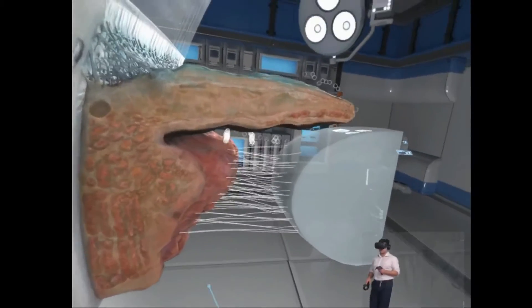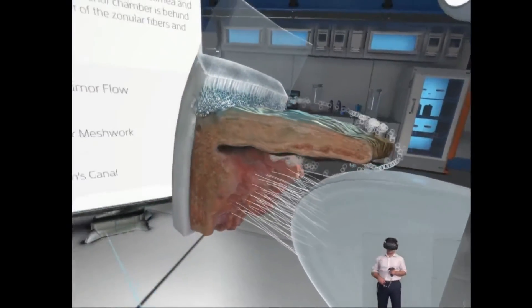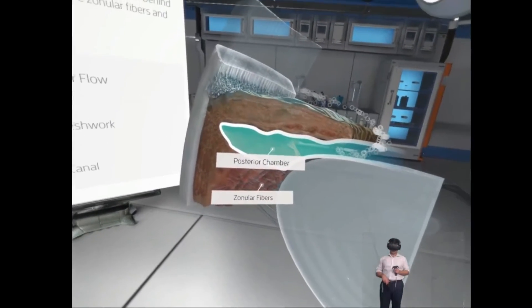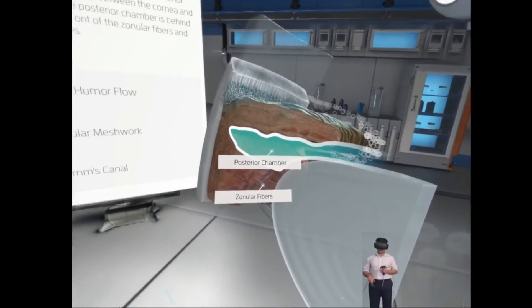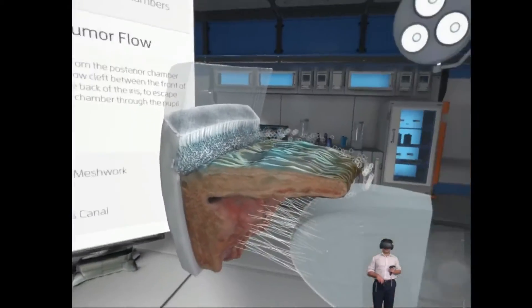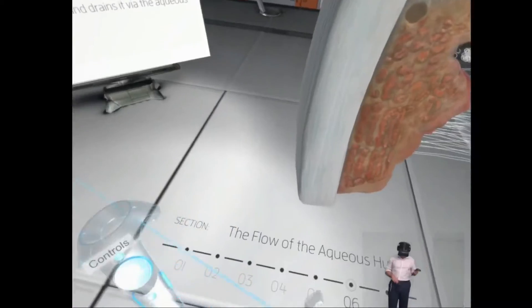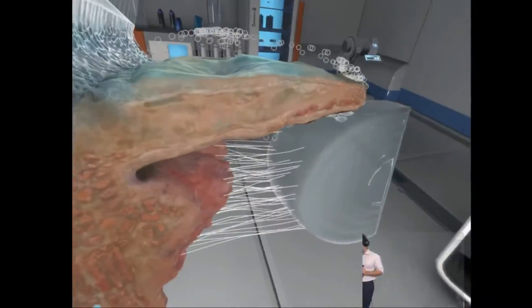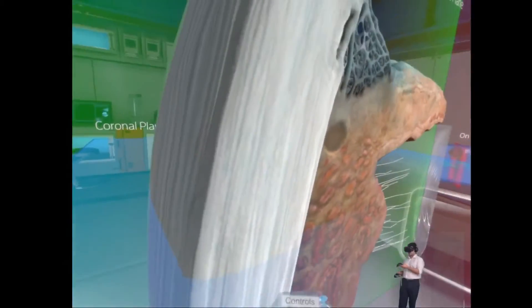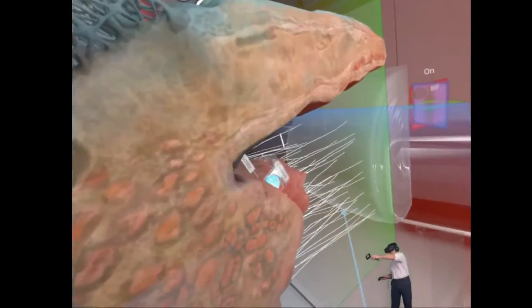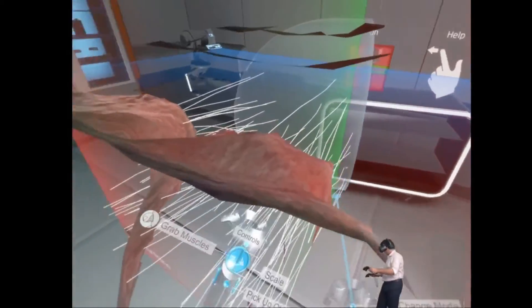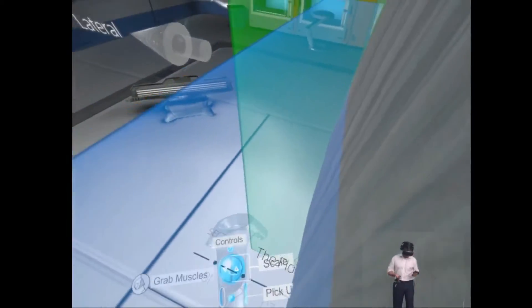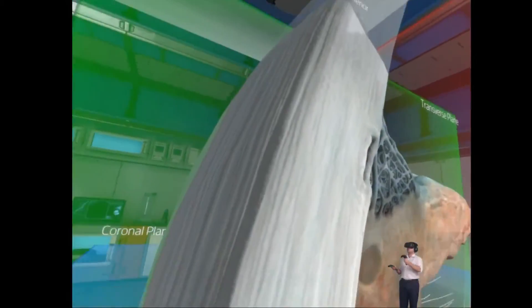There we go, so that was that, and now going to the aqueous humor flow. This is a nice model and this is very useful I think for explaining drainage to patients who are suffering from glaucoma. And the model itself tilts effectively to just allow you to look at the relevant parts, which I think is quite nice. This model doesn't seem to be able to be shrunk or increase in size, which is a bit of a disadvantage in comparison with the other ones, so I can't scale this one.